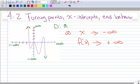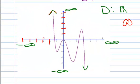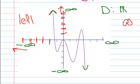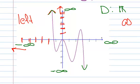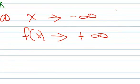Let's go over that again. As x gets smaller and smaller — in other words, it approaches negative infinity — then y gets larger and larger and approaches positive infinity. That is the left side of the graph, because it's on the left side of the y-axis.